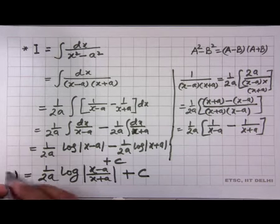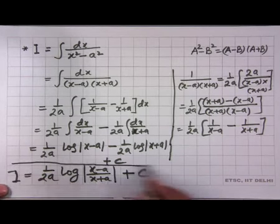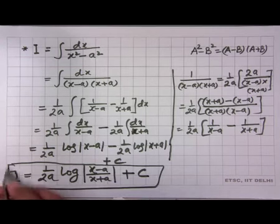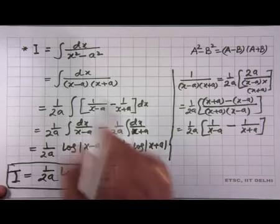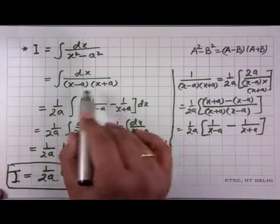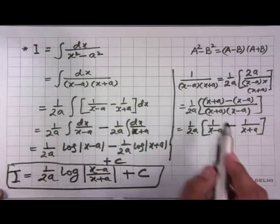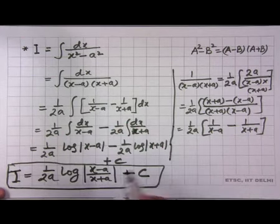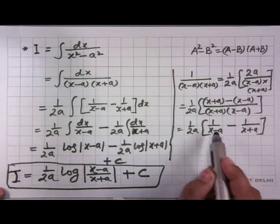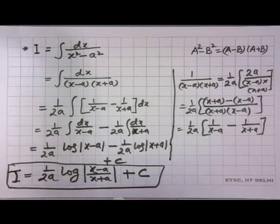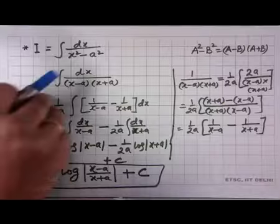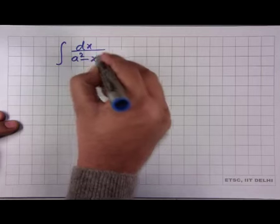The integral has been evaluated. The trick used was to factor the quadratic denominator into two linear factors and apply partial fractions. We will apply the same trick to evaluate ∫dx/(a²−x²).